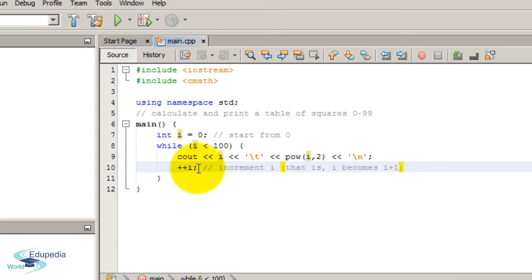i less than 100. Now the value of i is 1 and 1 is less than 100. Therefore, we can again go inside of the while loop code block.